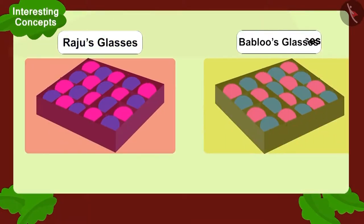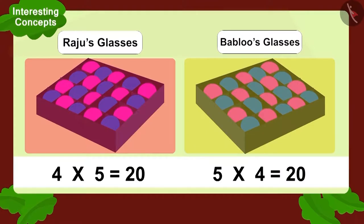The multiplication seen through both Raju and Bablu's glasses were exactly the same. Children, isn't it interesting? We can write any multiplication in two ways like this. And its answer will always be the same.